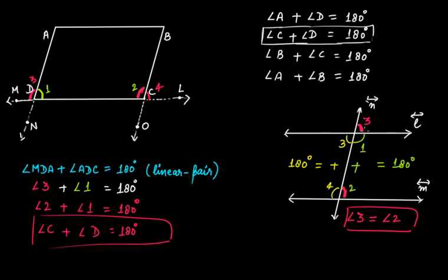You should know the properties of parallel lines with a transversal — they are really important. The pairs of corresponding angles are equal in measure. From this, we have proved that angle C plus angle D equals 180 degrees. You can apply the same approach to prove it for the remaining pairs of adjacent angles on your own.